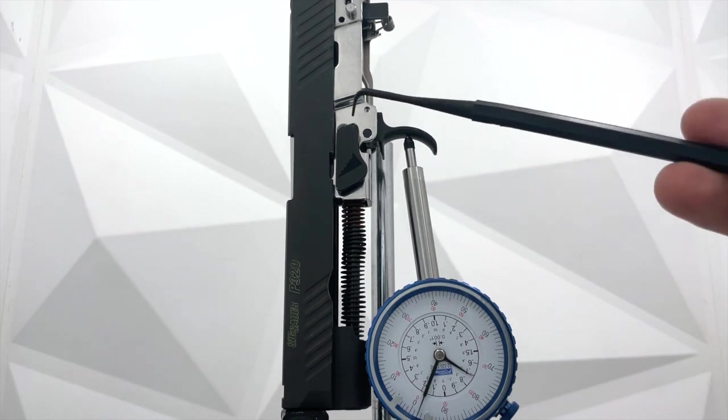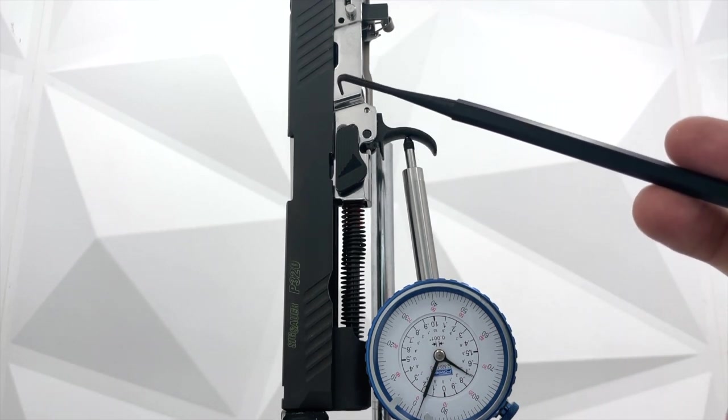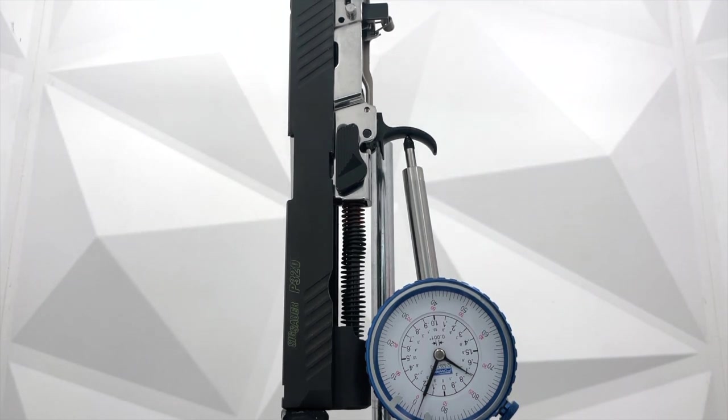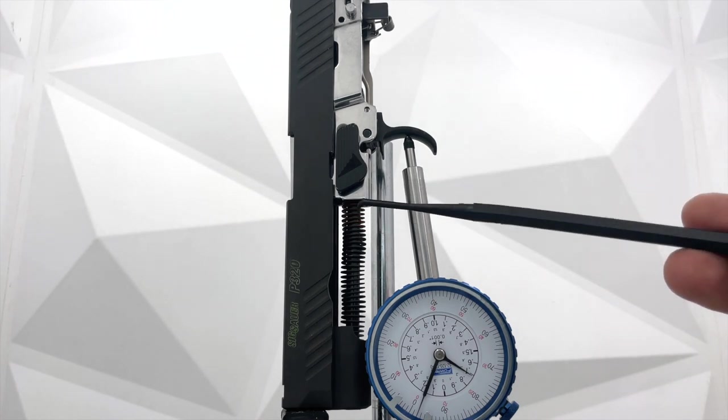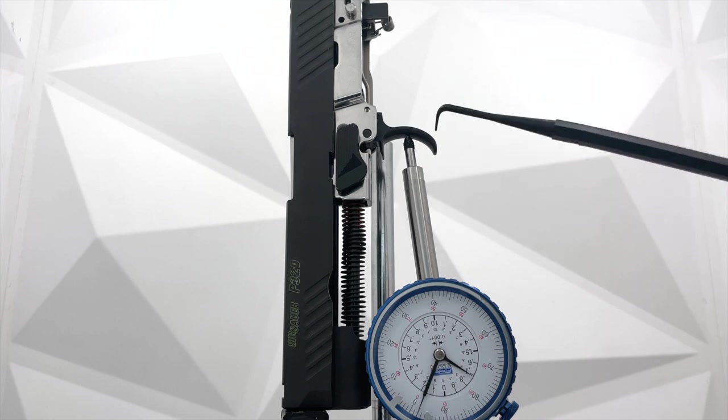So I think we've established that the striker safety disengagement parameters are 0.090 inches of trigger travel will equate to 0.036 inches of striker lever upwards movement. However, let's reinstall the sear and we'll do a trigger pull. And what we'll do is we'll move the trigger 0.090 inches, which we know is the amount required to disengage the safety. And then we'll check out how much the sear has moved at that point. And we can have a visual as to how much movement remains to actually fire the gun after the striker safety lever is disengaged.